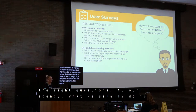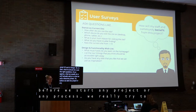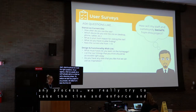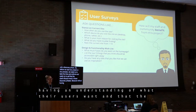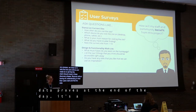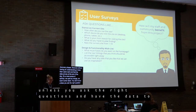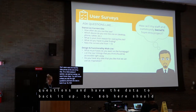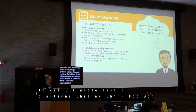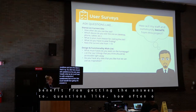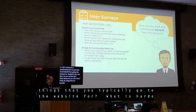At our agency, what we usually do is add on what we call a discovery phase. Before we start any project, we really try to enforce and sell that the client should invest in these discovery phases. Without understanding what users want and what the data proves, it's just a matter of opinion — like wanting orange or Comic Sans. You don't really know unless you ask the right questions. So Bob should ask questions like: how often do you visit the site? What device do you visit it from? What do you typically go to the website for?